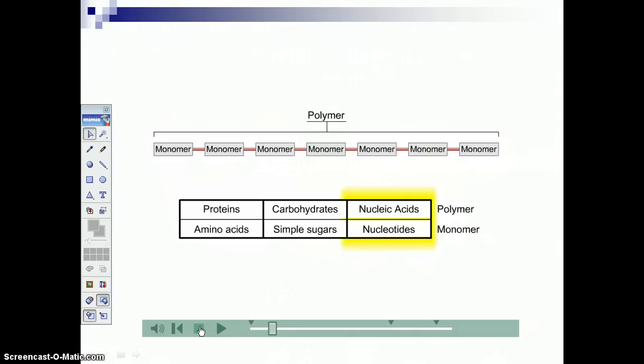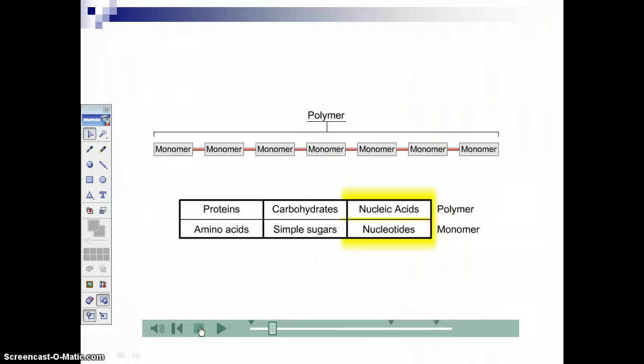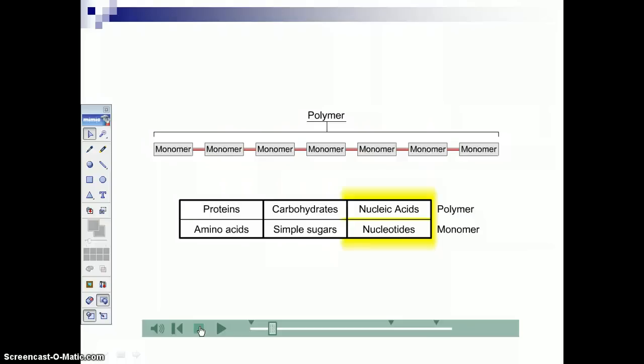So DNA is a polymer made up of lots of monomers. It's a big, huge molecule made up of lots of little, smaller parts. Mono meaning one, poly meaning many.